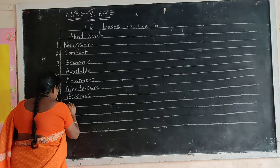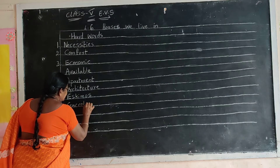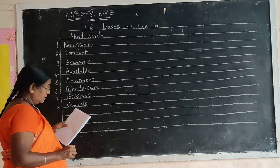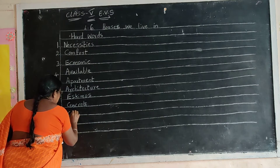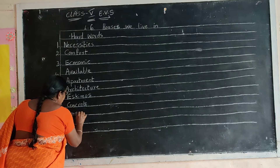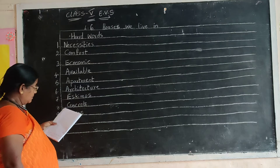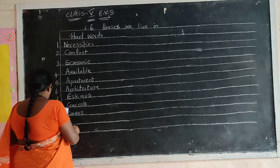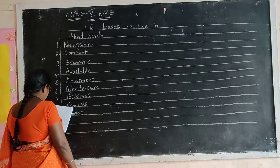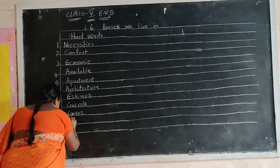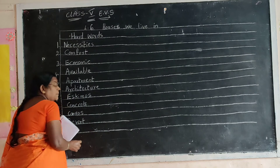Next one: Concrete. C-O-N-C-R-E-T-E. Concrete. Ninth one: Canvas. C-A-N-V-A-S. Canvas. Next one: Prevent. P-R-E-V-E-N-T. Prevent.